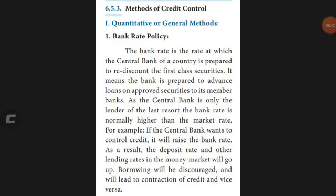The first quantitative measure is bank rate policy. If the central bank wants to control credit, it will raise the bank rate. When the bank rate keeps rising, deposit rates and other lending rates go up, and the rate of interest for loans increases. Borrowers are then discouraged from taking credit from the bank. Conversely, if the rate of interest comes down, borrowers will be encouraged to take loans from the bank.